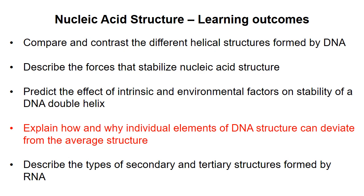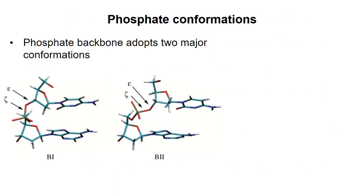In this video I will continue discussing flexibility within DNA structure, focusing on the conformation of the backbone. Study of DNA crystal structures reveals that the epsilon and zeta bonds that join the 3' carbon of the sugar to the phosphorus atom in the backbone adopt two major conformations called B1 and B2.